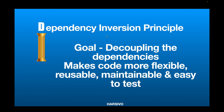If we follow dependency inversion and hide all the low-level module details behind an abstraction layer, that makes our code more flexible, reusable, maintainable, and more testable. The main reason your code should be decoupled is that if there are any changes in the low-level module, the high-level module should not be affected.